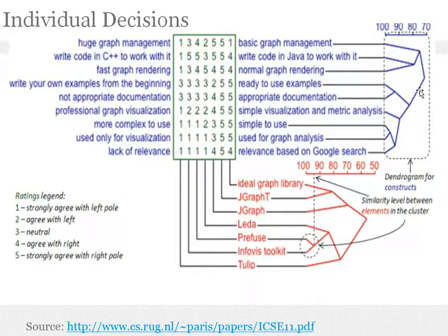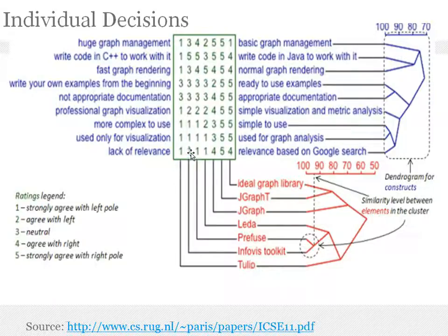These dendrograms show a similarity level among concerns or among alternatives. We can see, for example, that Prefuse and InfoVis are quite similar, and we can trace this back through these ratings — we can see that the ratings are quite similar. There is also an ideal graph library, and we can see that JGraphT is most similar to the ideal graph library.